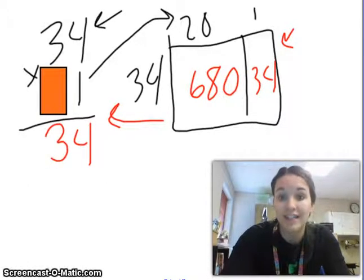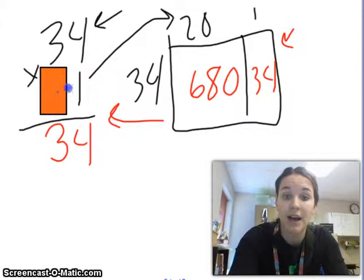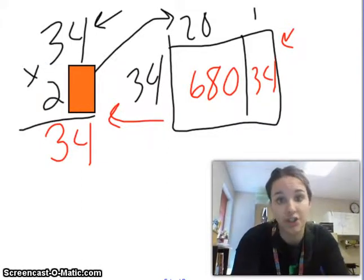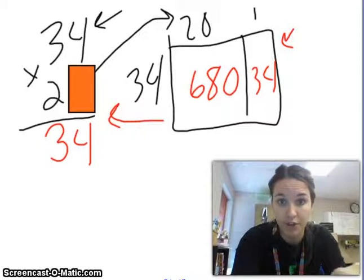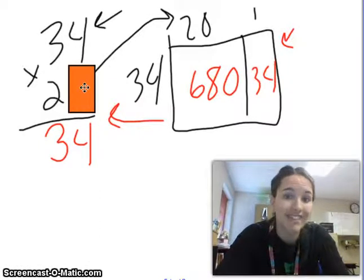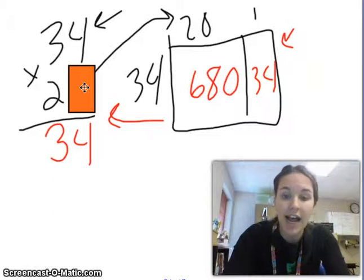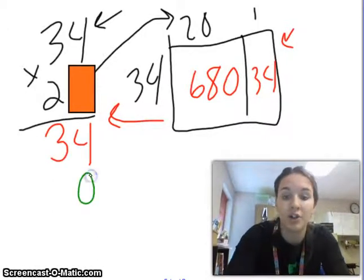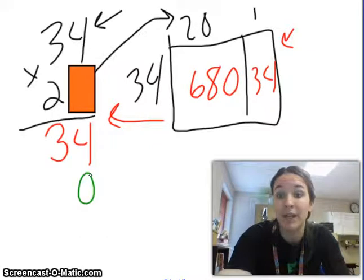Once I've multiplied the ones, then I'm going to shift that box from the ones to the tens. Now, I know that this is not a 2. I know that it's a 20. So, I'm doing 34 times 20. Since I'm doing 34 times 20 and not times 2, I can automatically assume that there is going to be a 0 in the ones place. Because my answer is 10 times bigger than 34 times 2.